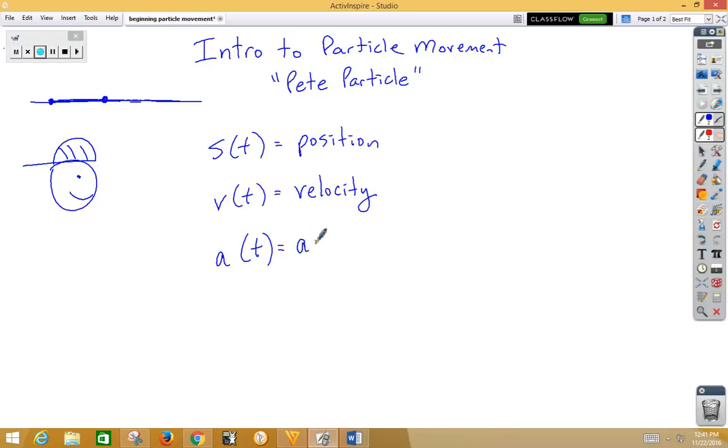A of t stands for acceleration, and acceleration combined with velocity is going to help us decide whether Pete is speeding up or slowing down.